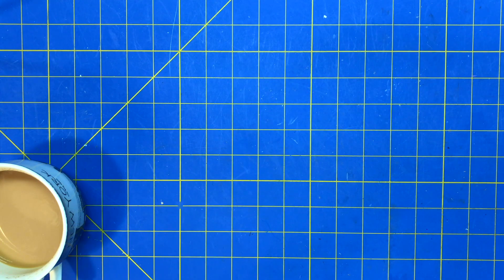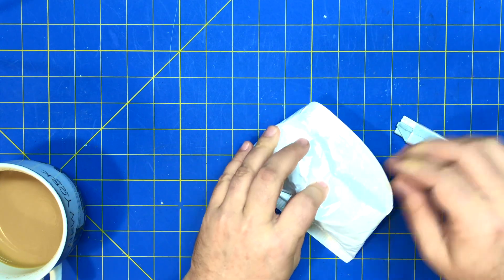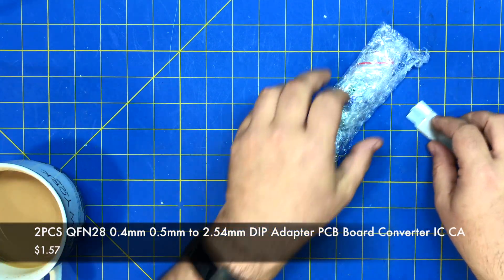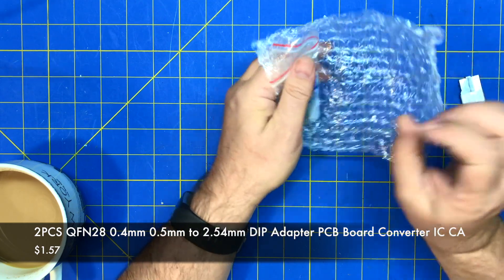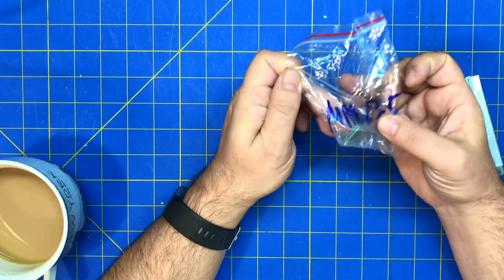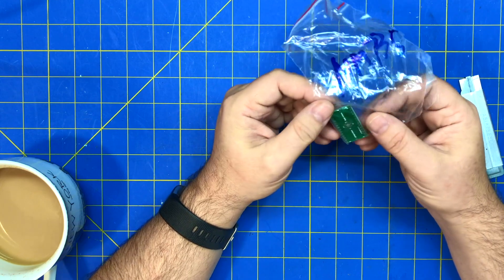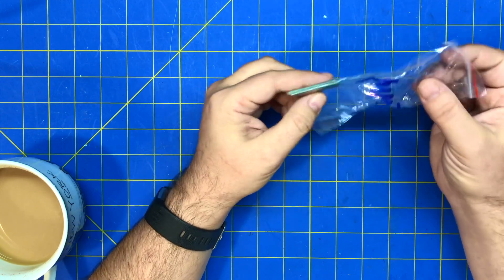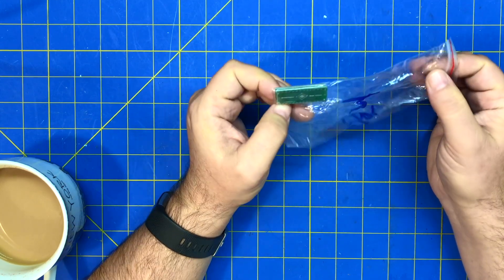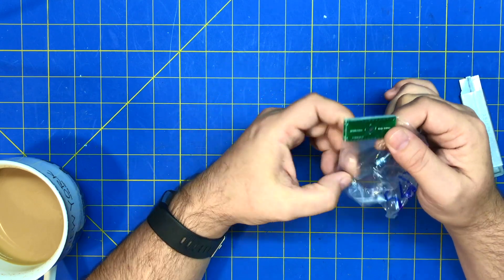All right, first one, electronics. Some kind of breakout boards, I think. Let's see. Just two of them.